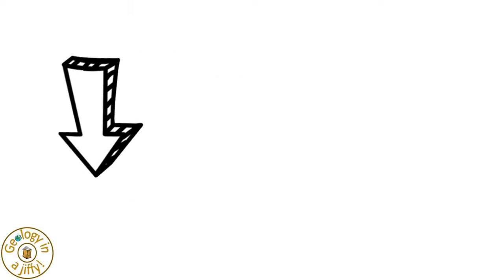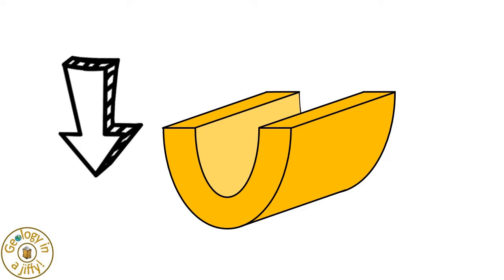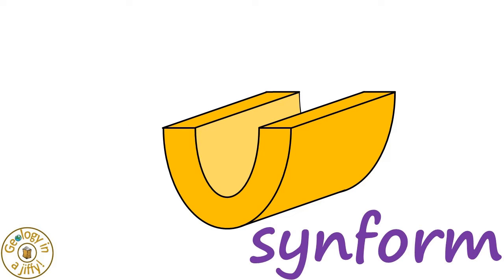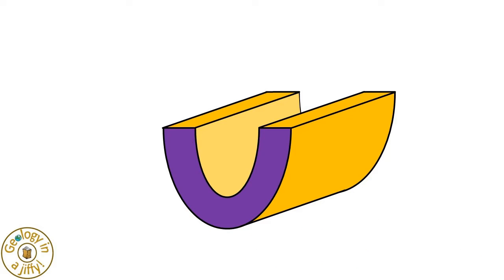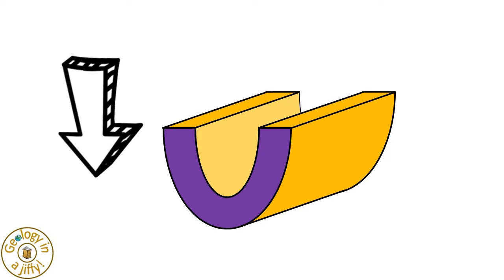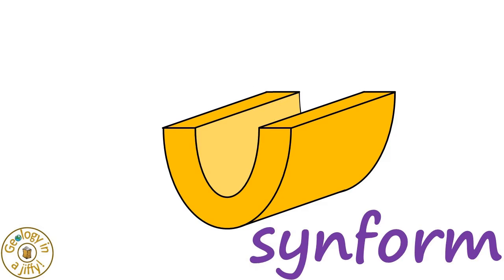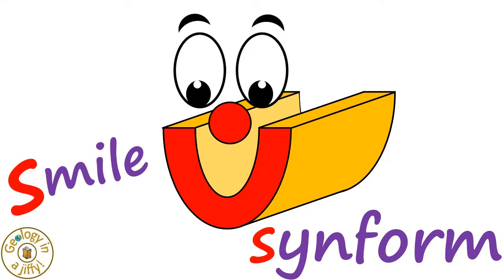A fold that bends concavely downwards like this is called a synform, which we can remember by the outline of the fold looking like the letter U as it bends downwards, and also by the word synform starting with S — the fold looking like a happy smile.